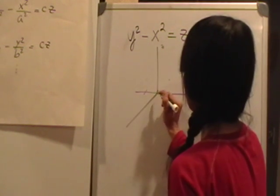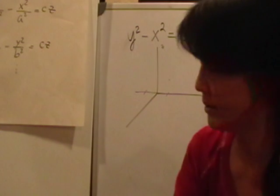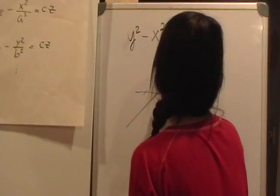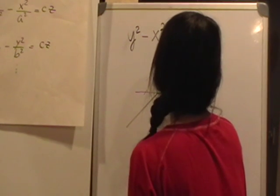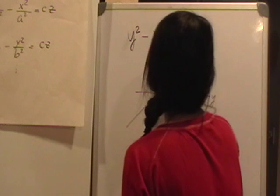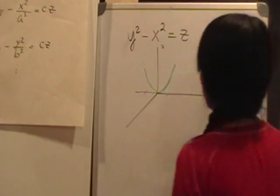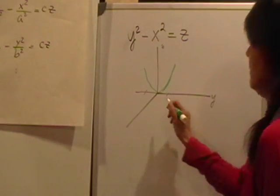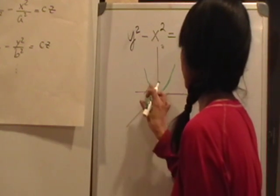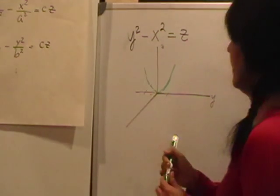So there's my parabola on the yz-plane. Let me color that in green — the green parabola is flat on the yz-plane.